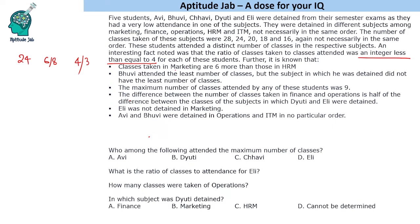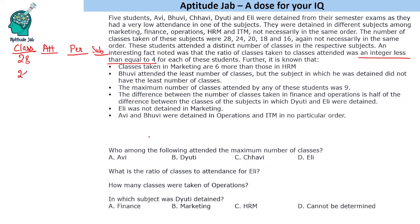Certain more information is given: classes taken in marketing are 6 more than those attended by the student with the least number of classes, and other information is given. We shall make a table with columns for number of classes, attendance, name of the person, and the subject. The numbers are 28, 24, 20, 18, and 16.